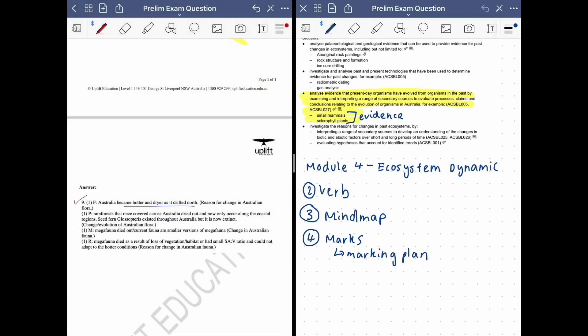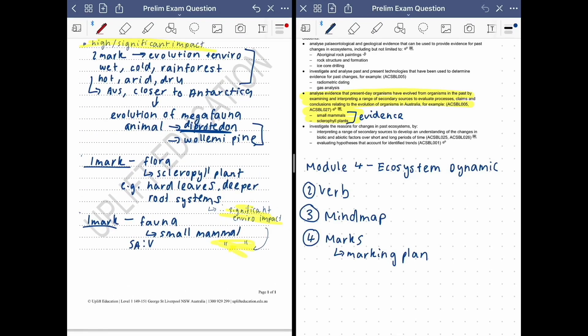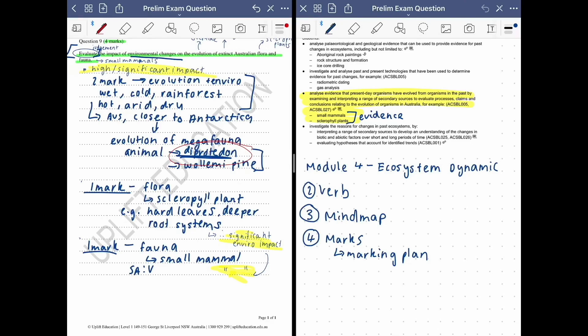Rainforest that once covered Australia dried out and now only occur along coastal regions. Sea fern glossopteris existed throughout Australia but is now extinct. So this is showing extinction of some megafauna that were there previously and it's talking about the Australian climate nowadays. So here we've talked about the diprotodon in our example and we've mentioned how there are no rainforests anymore in the hot dry climate. So we've got that.